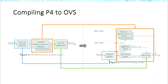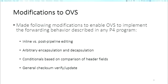The problem is how to compile the P4 abstract forwarding model onto the OVS forwarding model. The first goal is to take the packet parser and map it onto OpenVSwitch. The second part is how to take custom match-action tables and map them onto the slow-path match-action tables as well as the fast-path caches. In order to support these changes in OVS, we modified OVS to add support for inline versus post-pipeline editing, arbitrary encapsulation and decapsulation, header-field-to-header-field comparisons, and general checksum verify and update functions.